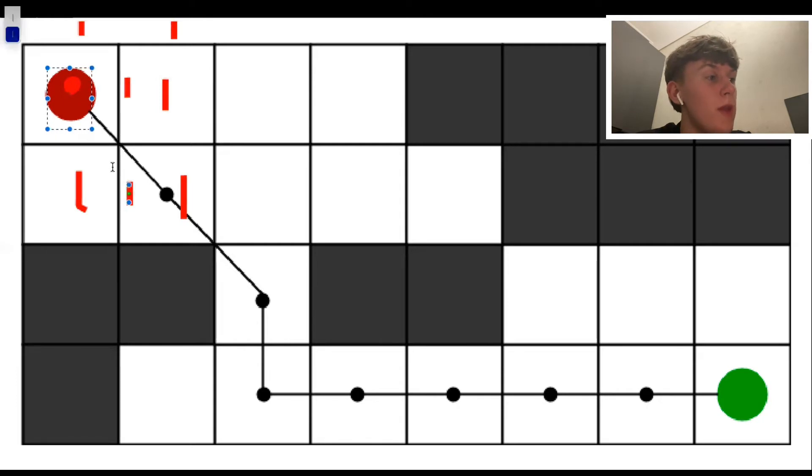As every edge in this grid is worth one as seen by the drawings, we now know that the distance between the start node and the adjacent nodes is one. So that's our start node score essentially.